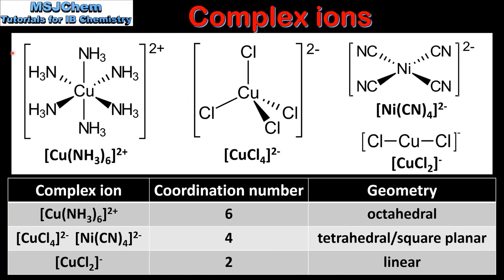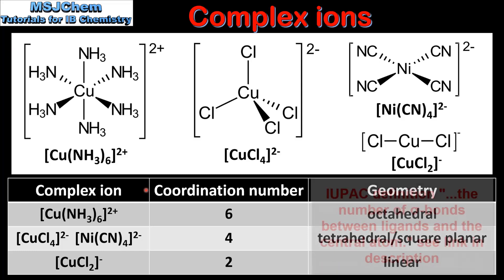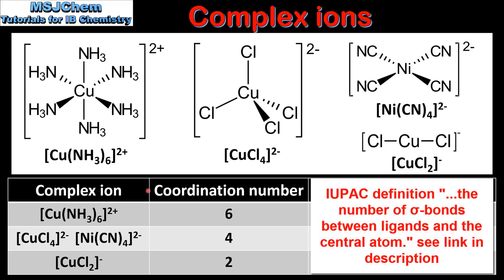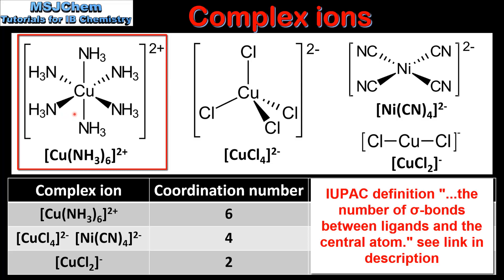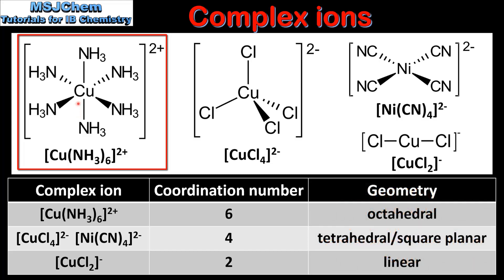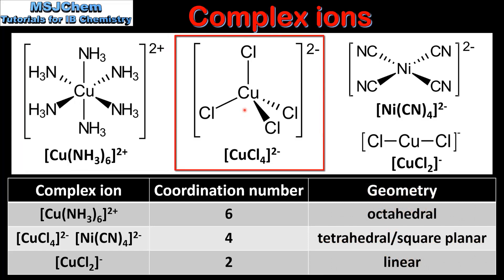Next we look at the coordination number and geometry of these complex ions. The coordination number is the number of coordinate covalent bonds that are formed between the central metal ion and the ligands. Starting with the example on the left, there are 6 coordinate covalent bonds formed between the ligands and the central metal ion, so the coordination number is 6 and the geometry is octahedral. In the next complex ion there are 4 coordinate covalent bonds, giving a coordination number of 4, and the geometry is tetrahedral.